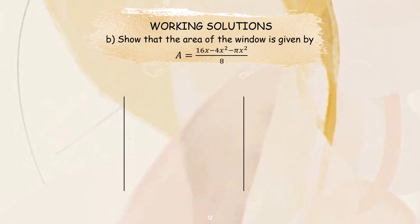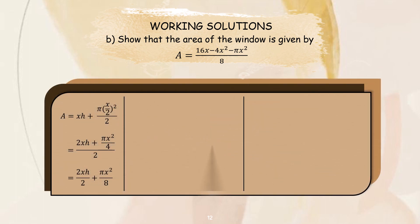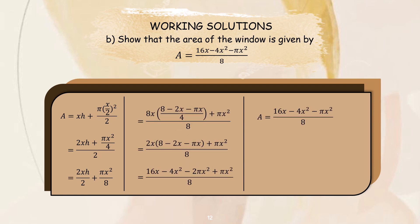For question (b), show that the area of the window is given by A = (16x minus 4x squared minus pi x squared) divided by 8. Since the question says 'show', we need to arrive at the same final answer. The area formula of the window is A = xh + pi multiplied by (x over 2) squared divided by 2. Solving the equation, we get the final answer A = (16x minus 4x squared minus pi x squared) divided by 8, which matches the given expression. The area of the window is proven.